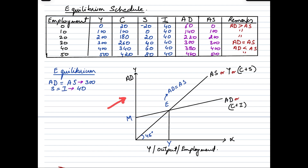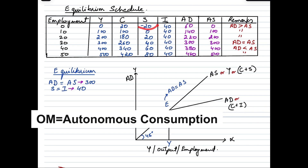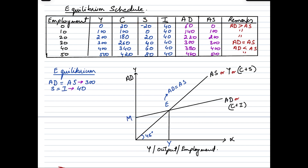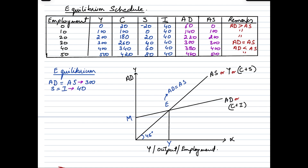This is how the AD-AS approach is represented graphically. The aggregate supply curve is a 45-degree line, and the aggregate demand curve begins from a point above the origin, indicating autonomous consumption — which is why savings starts as a negative amount, as people draw on prior savings or borrowings for expenditure. Point E is where equilibrium is attained, representing the economy's level of income, output, and employment.